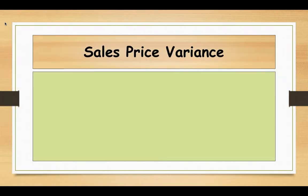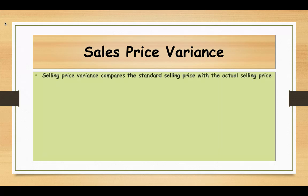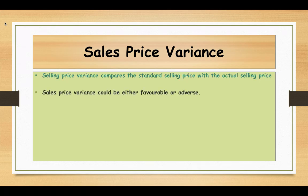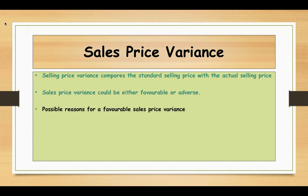Here we are going to see the sales price variance. The selling price variance compares the standard selling price with the actual selling price. This variance will show the change in profitability due to this change in selling price. The selling price variance could be either favorable or adverse. Favorable means actual selling price is greater than standard; adverse means actual selling price is lower than standard.